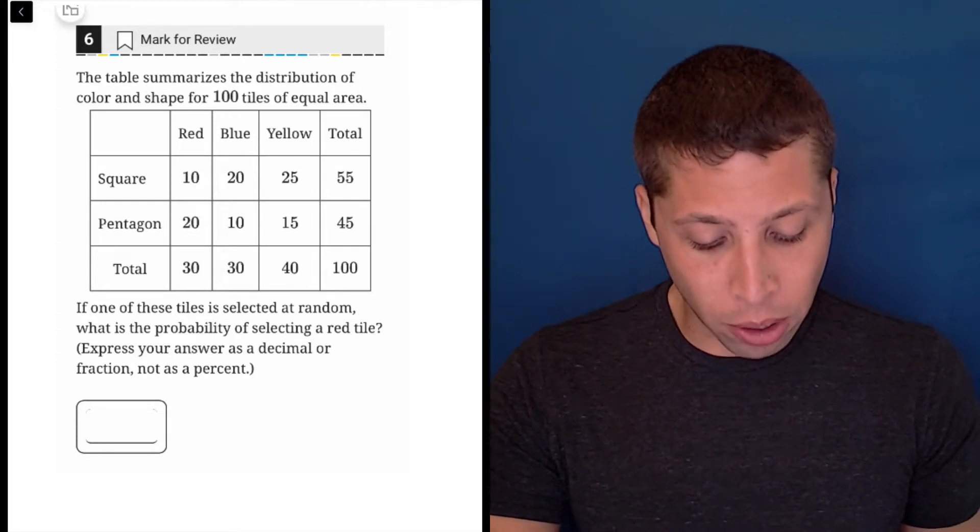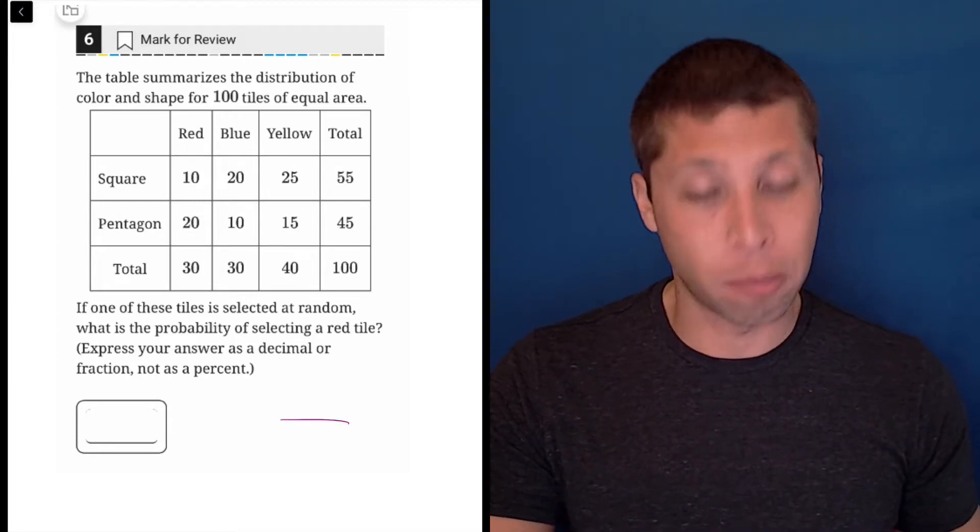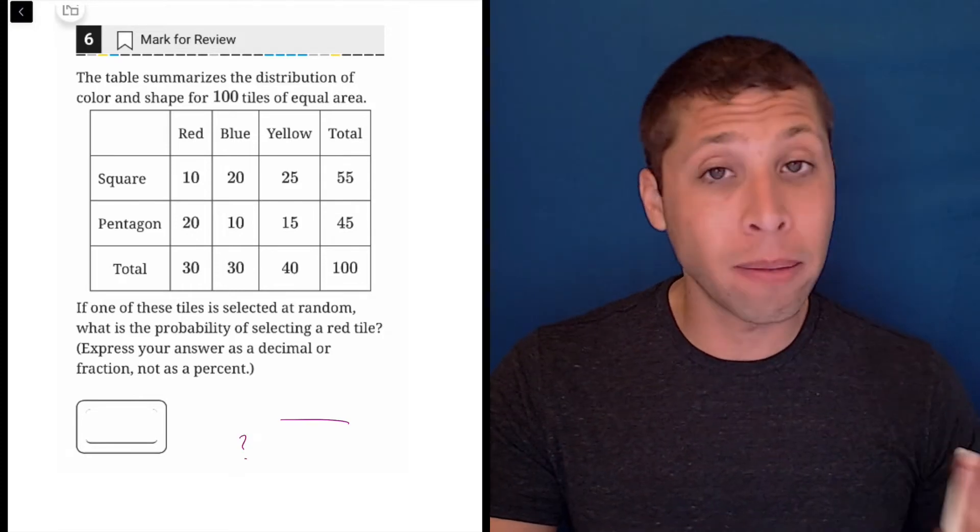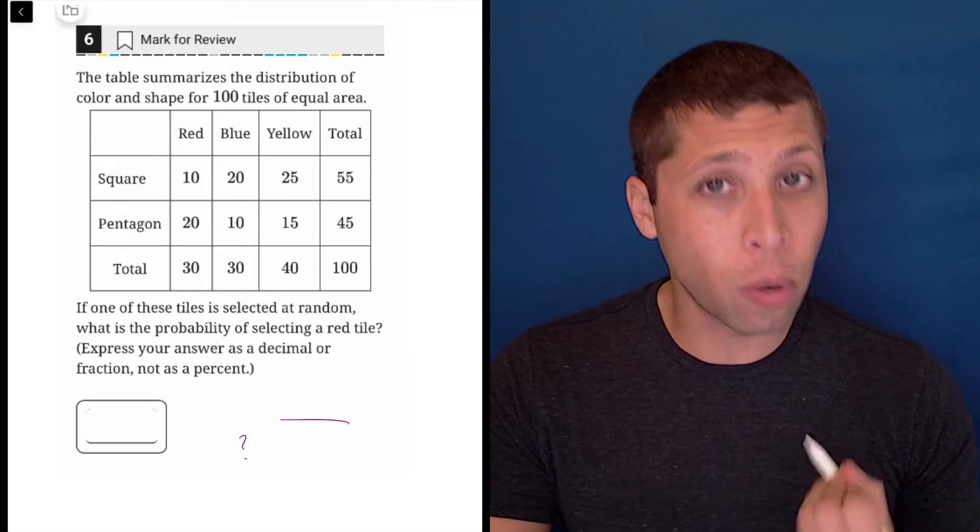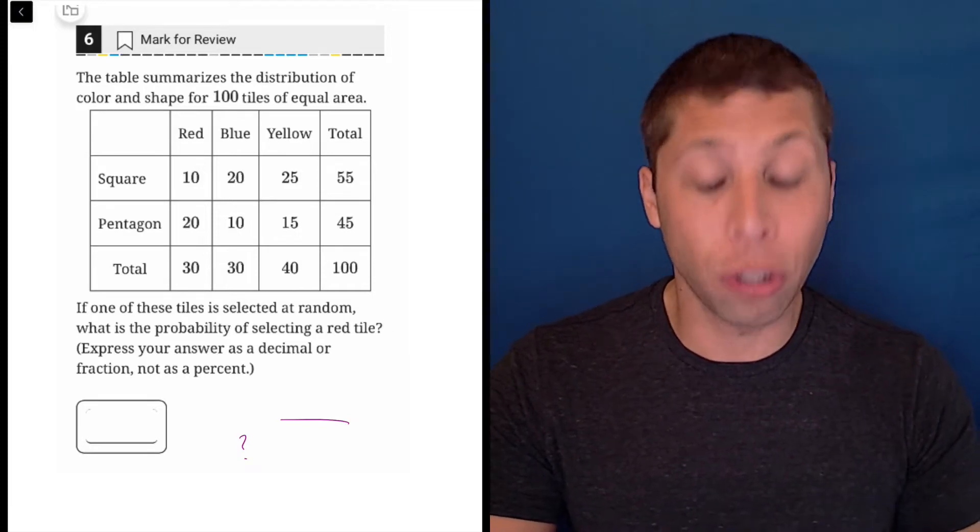If we're going to create a fraction to represent this probability, what is the bottom number? The bottom number, the denominator, is always where things get hard. So just when you're reading the question, think about that. What are we choosing out of?